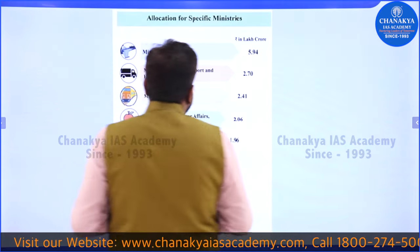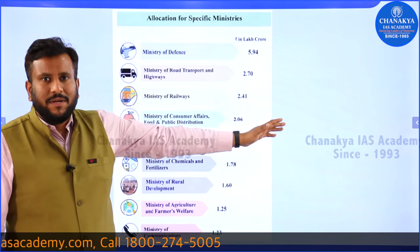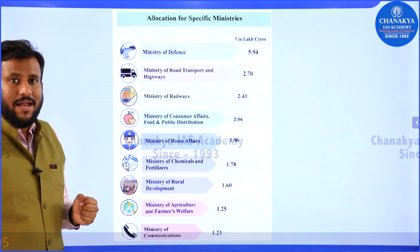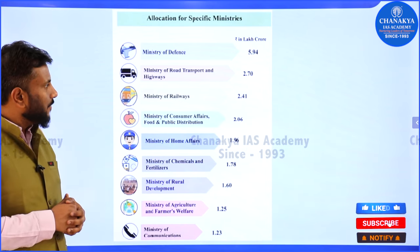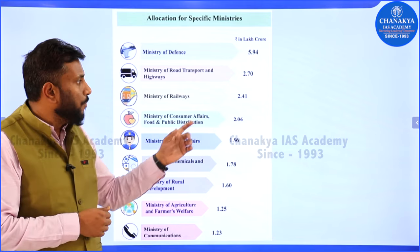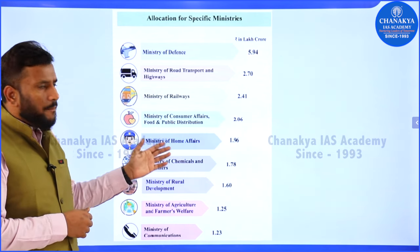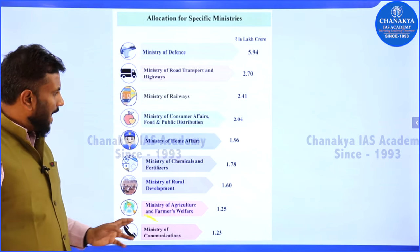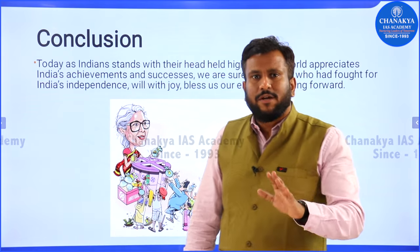In terms of ministry-wise budget allocation, the Ministry of Defence receives the largest share at around 6 lakh crore. The Ministry of Road Transport and Highways gets 2.7 lakh crore, railways receive their highest ever allocation at 2.4 lakh crore, the Ministry of Consumer Affairs and Public Distribution gets 2 lakh crore, Ministry of Home Affairs 2 lakh crore, and the Ministry of Chemicals and Fertilizers 1.78 lakh crore.